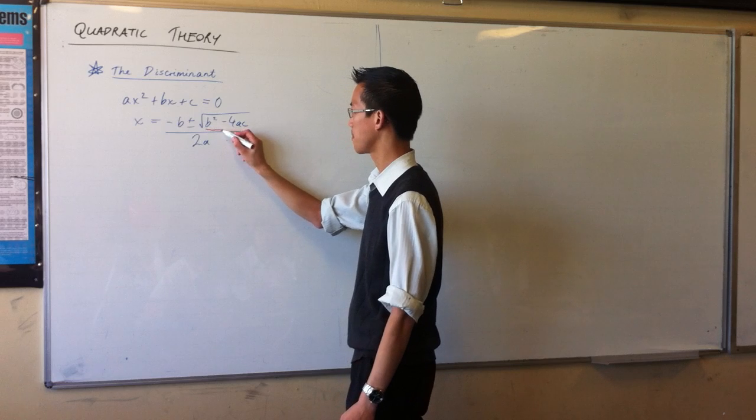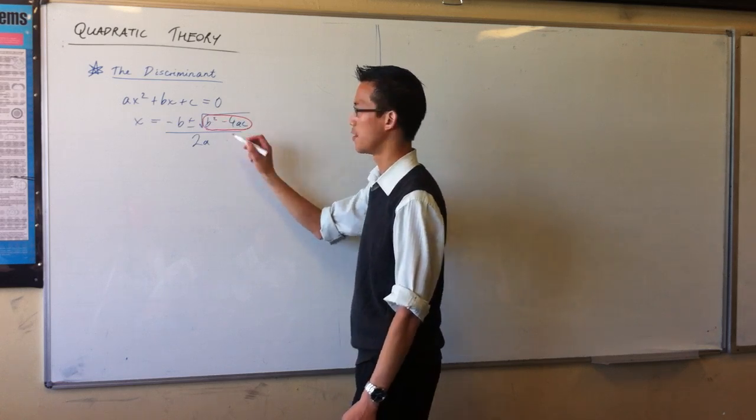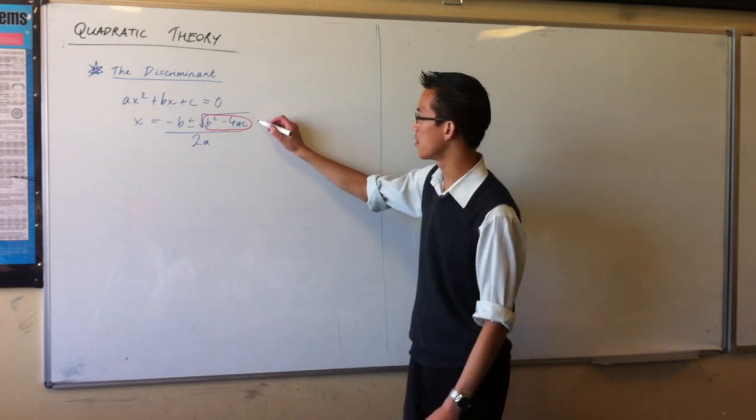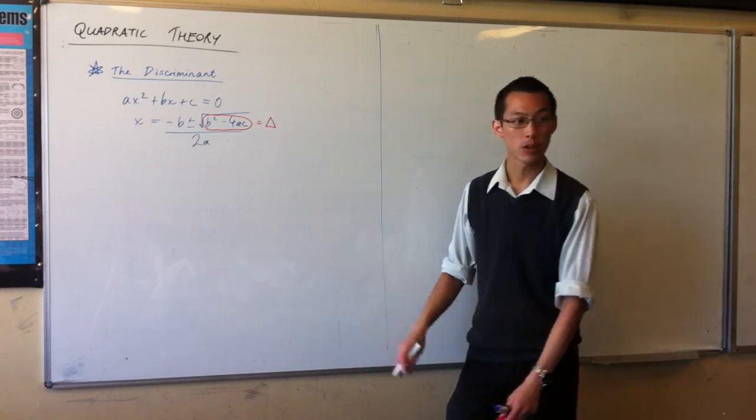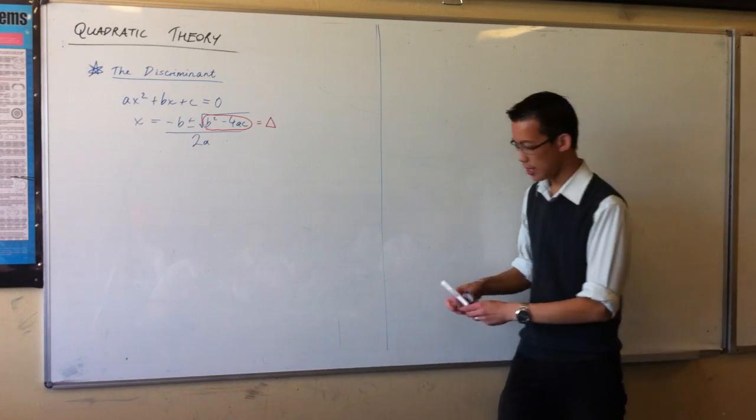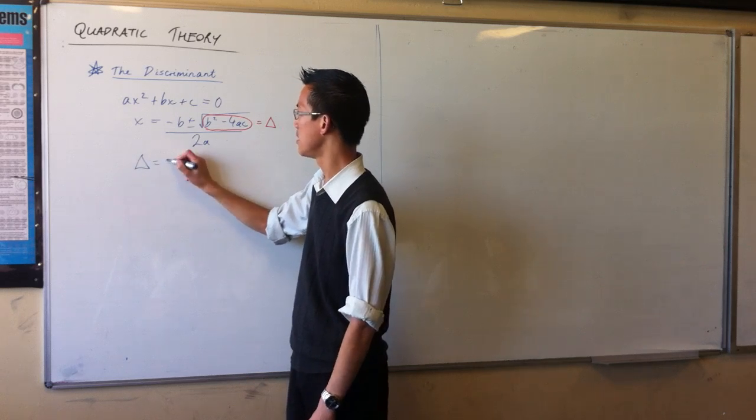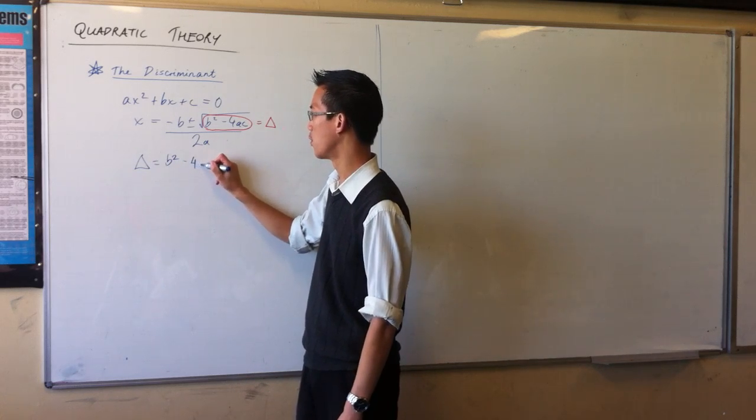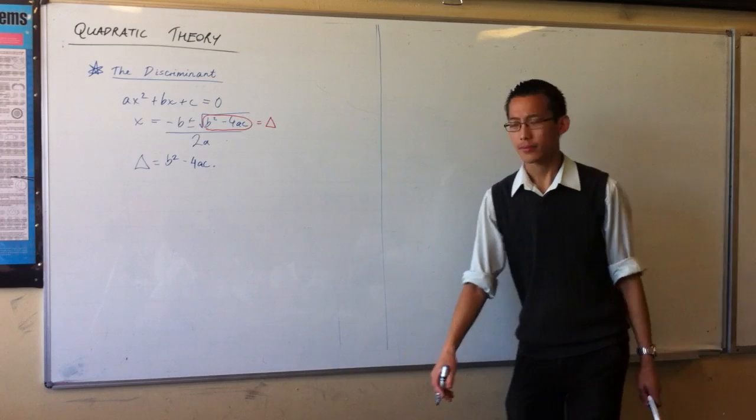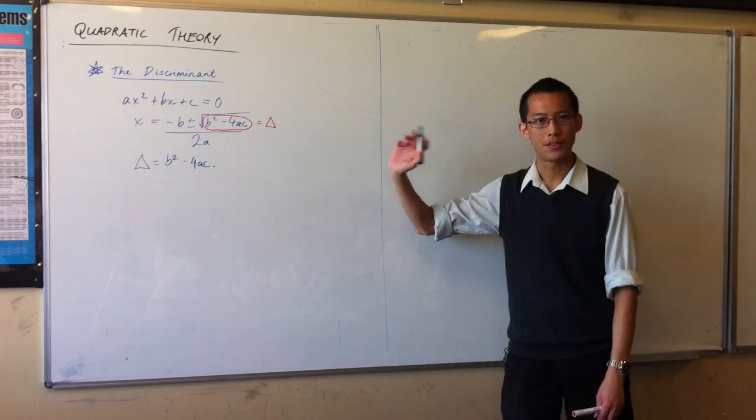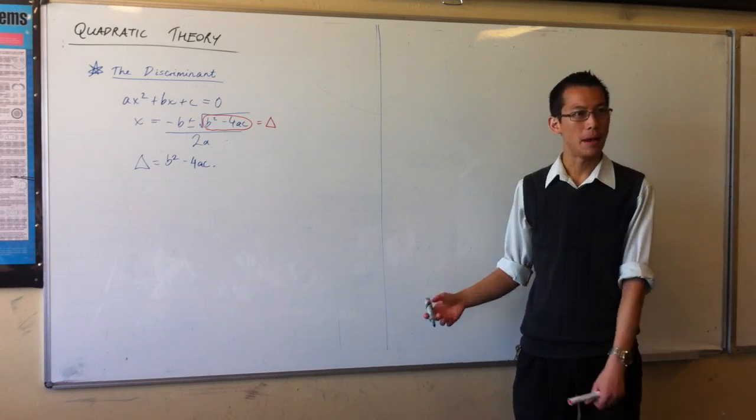And that's why we call this the discriminant. So, we denote it by the special sign delta. So, if delta is equal to, if the discriminant is equal to b squared minus 4ac, when we know the value of delta, what does that tell us about the number of roots?